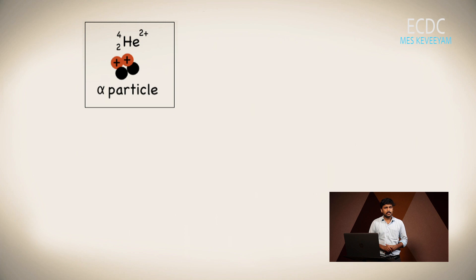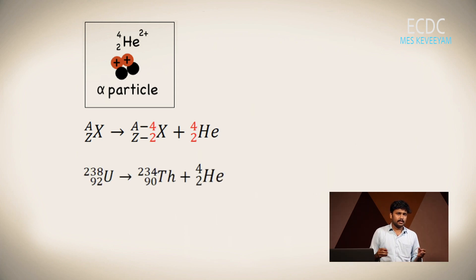Alpha particles are helium nuclei which contain two protons and two neutrons. If a particle emits an alpha particle, its atomic number will reduce by two and its mass number will reduce by four. For example, uranium-238, if it emits an alpha particle, will become thorium-234.